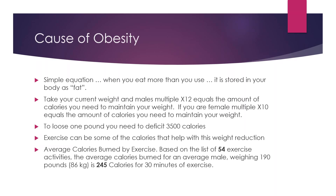The simple equation is: when you eat more than you use, it is stored in your body as fat. If you take your current weight and you are male, multiply by 12 — that equals the calories you need to maintain your weight. If female, multiply by 10. For example, a 150-pound female would need a 1,500 calorie per day diet to maintain weight, which is very difficult. To lose one pound, you need a deficit of 3,500 calories, meaning you would need to decrease to 1,000 calories every single day for seven days to lose one pound.